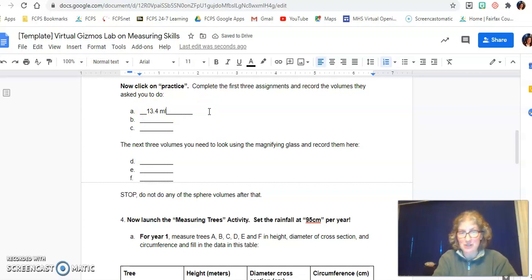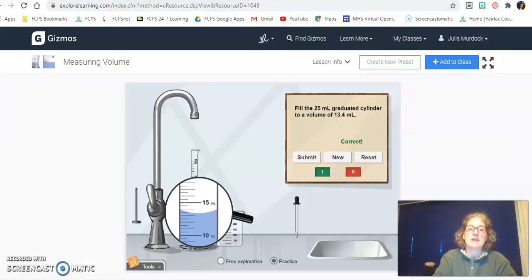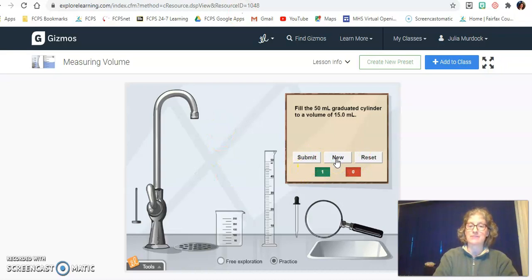So then what you do is you go over to your answer sheet and your first practice was 13.4 mils and you don't have to worry about whether you got it right or not. Just write down the volume and then go to the next assignment. Go back and a new assignment and that'll be 15 mils so you do that and you write the 15 mils in and so forth.